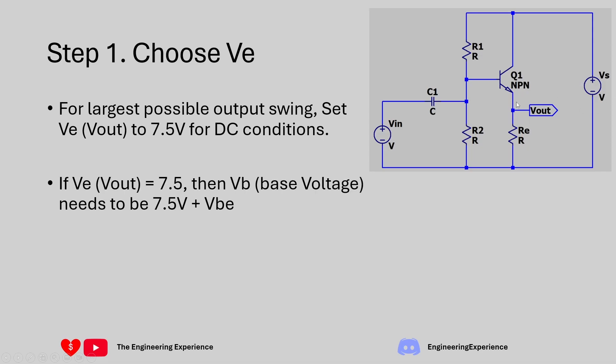If we set Vout over here to 7.5, then that means we need to set the base voltage to 7.5 plus VBE. That's 0.6 volts. So that gives us a base voltage of 8.1 volts. We have 7.5 volts here and we have 8.1 volts over here which is the base of the transistor.